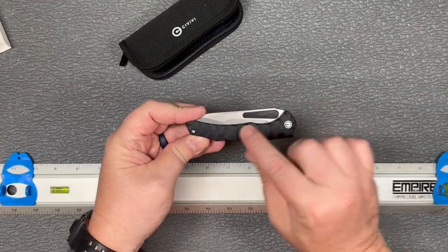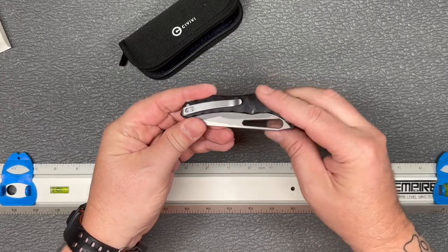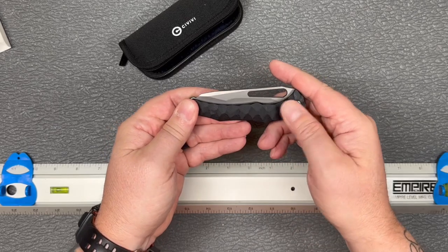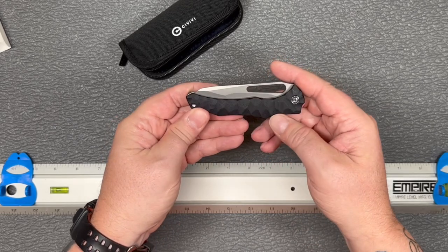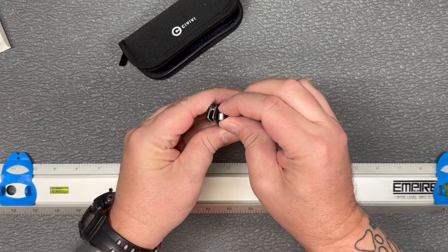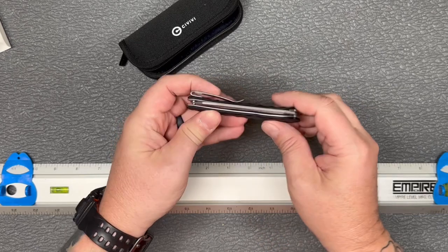Now as you can see, this one here is the black G10 handles. They've got a nice little texture to them, kind of a chip flint texture, I would call it. Got your pocket clip back here, nice and deep. Really good tension on it. It's tip up carry.